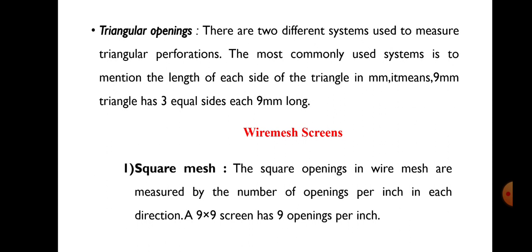The third opening in perforated metal screen is the triangular opening. There are two different distinct systems used to measure triangular perforations. The most commonly used system is to mention the length of each side of the triangle in mm. For example, a 9 mm triangle has three equal sides and each has a dimension of 9 mm, that is, the length of each side is 9 mm. This is the common way to designate triangular opening in a perforated metal screen.